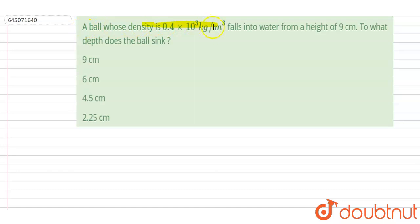is 0.4 into 10 to the power 3 kilogram per meter cube falls in water from a height of 9 centimeter. To what depth does the ball sink? So if you see, if I say that this is the water